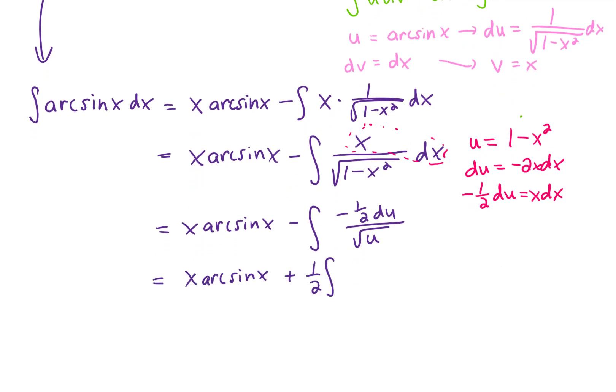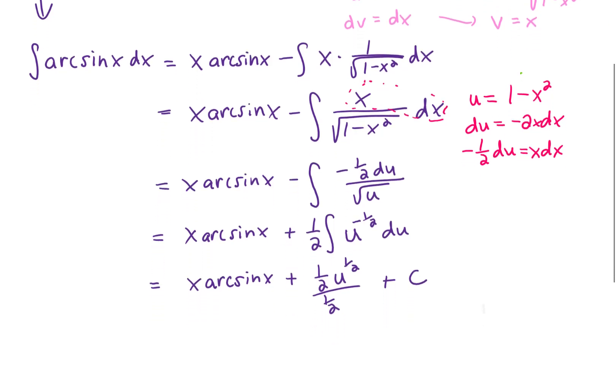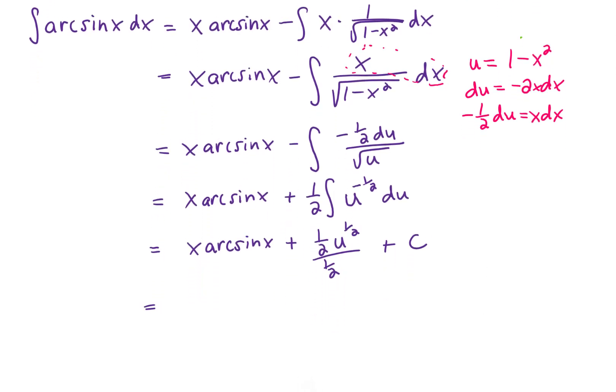Let's rewrite this integral. You can pull the 1 half out in front of the integral, cancel the negatives to make that a plus, and the square root of u in the denominator can be written as u to the negative 1 half. Now that's something that we can integrate. We add 1 to the power on u, giving us a 1 half power. We then have to divide by that 1 half power, which is pretty neat because it cancels out our 1 half.